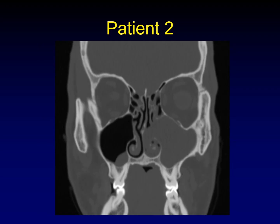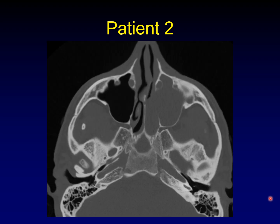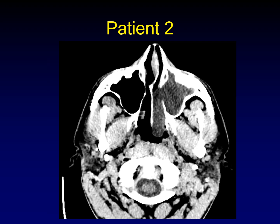Here is patient number two. We have a mass filling the maxillary sinus and finding its way out into the nasal cavity. Here's the axial image on this patient, and you can see the relationship the mass has to the medial wall of the maxillary sinus. In this patient, I don't have an MRI, but I do have a soft tissue window that shows the mass and its extent.